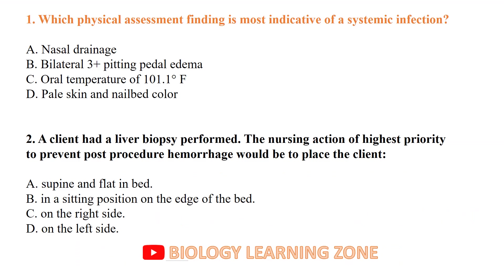MCQ number one: Which physical assessment finding is most indicative of systemic infection? The most indicative finding is temperature — an oral temperature of 101.1°F — which indicates systemic infection.